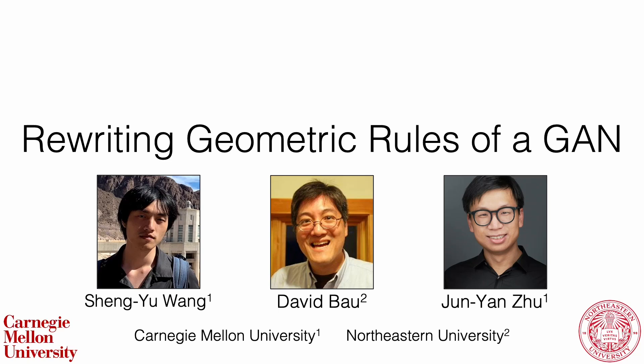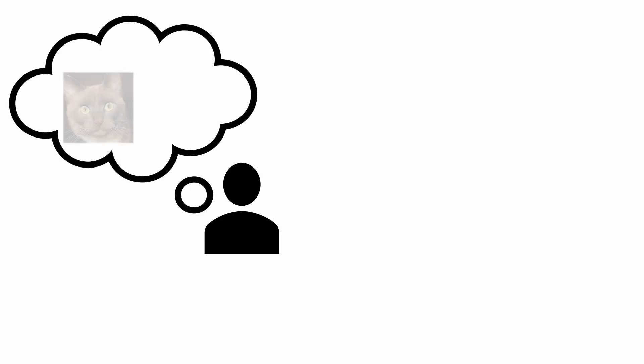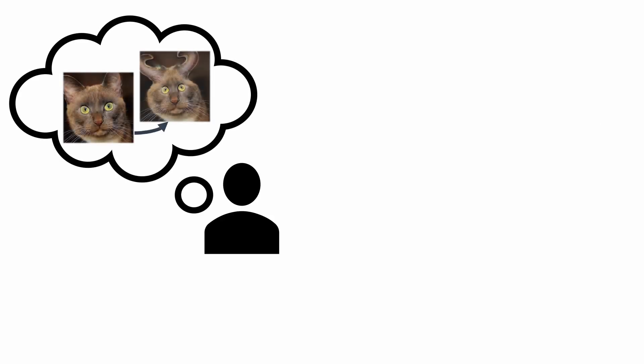We present a method to warp a generative model. Warping is a powerful way to create fantastic new images. We can warp a picture of a cat to create a totally new creature, like a long-eared rabbit cat.